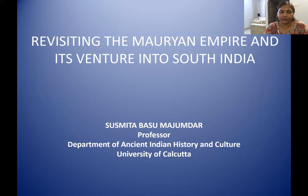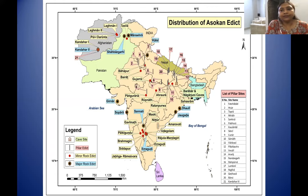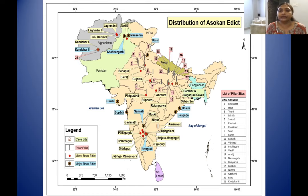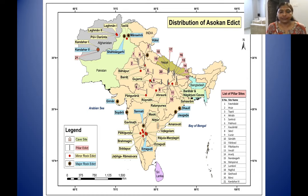The topic of my presentation today is 'Revisiting the Mauryan Empire and its Venture into South India.' I'll give a brief introduction about the Mauryan inscriptions, because we'll be mainly looking at Mauryan inscriptions since the journey can only be undertaken on the basis of these and archaeological sources. South India already had a megalithic culture coexisting with the early historic features, and suddenly we start getting inscriptions. Ashoka was the first to issue inscriptions uniformly throughout the subcontinent, right from Afghanistan to Karnataka. Here is a map showing the distribution of Ashokan edicts from Afghanistan to Karnataka and Andhra Pradesh.